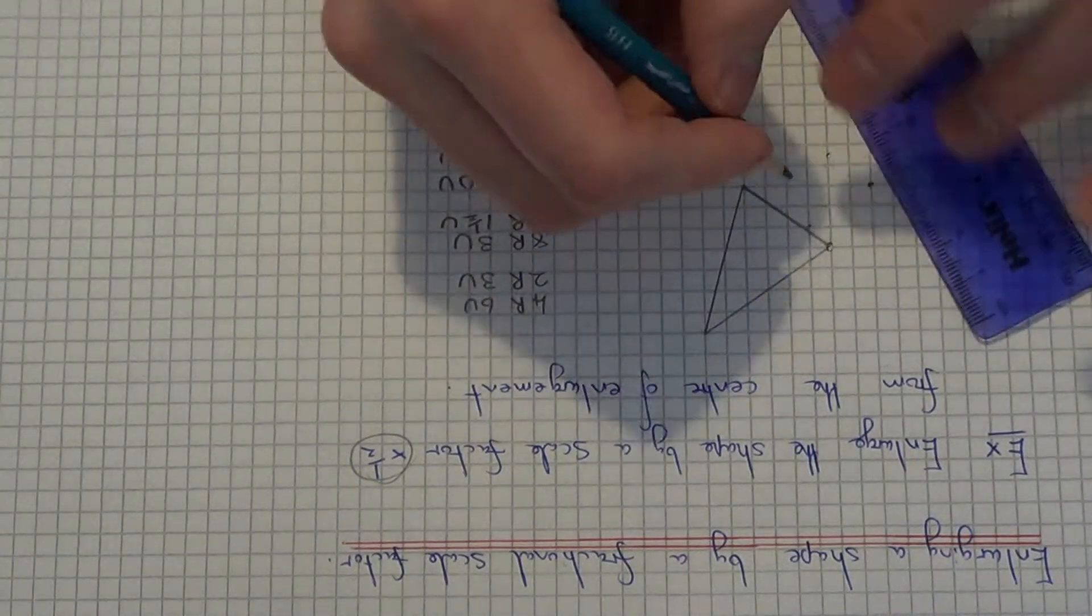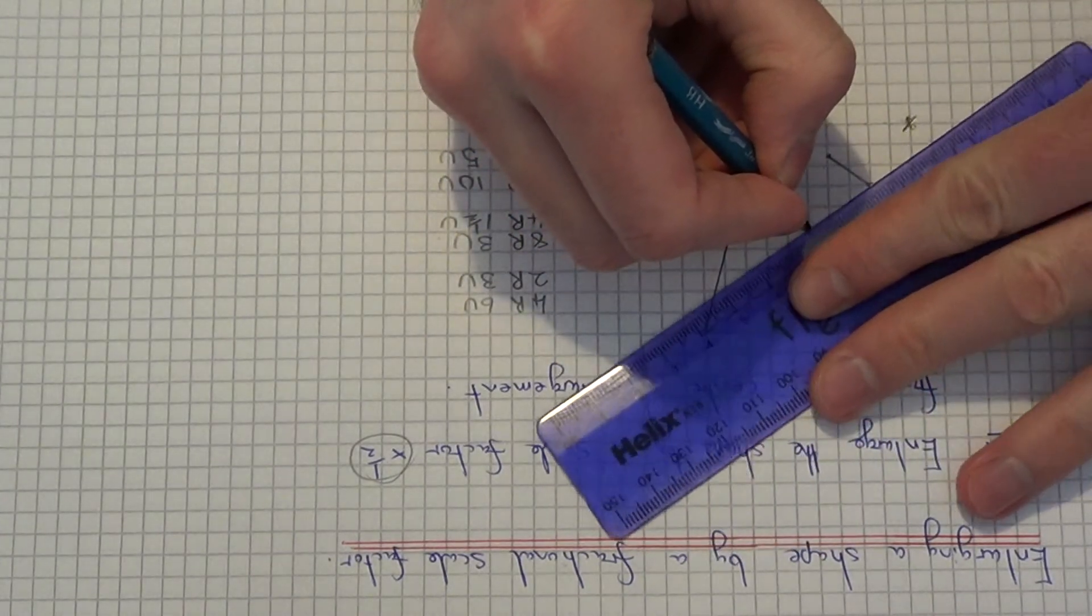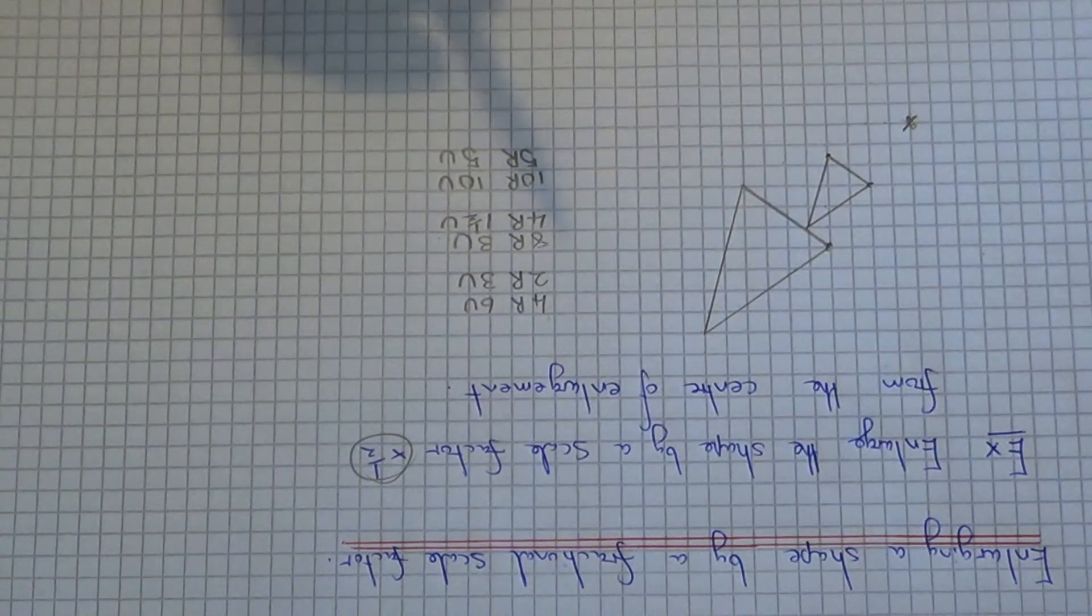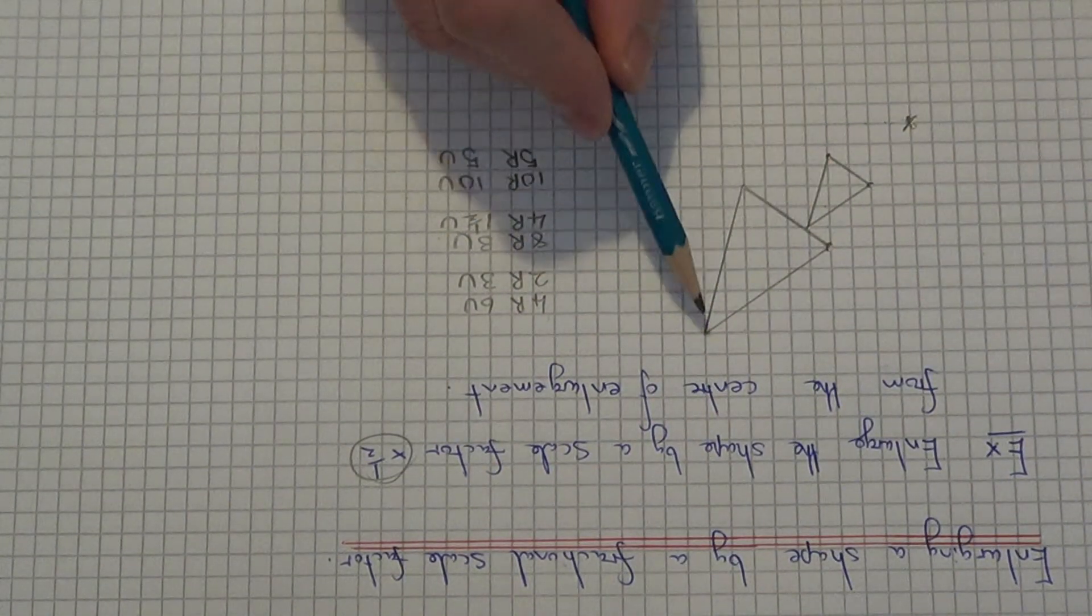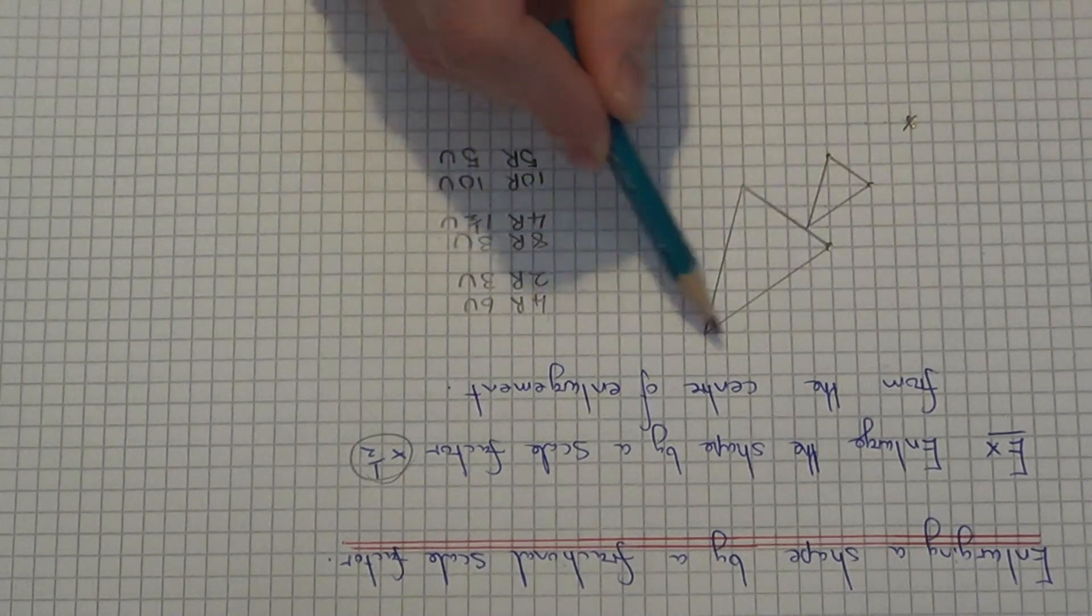So once you've done it, just join the points up neatly with your ruler. So as you can see it's the same as the original shape but all the side lengths are half as long as the original shape.